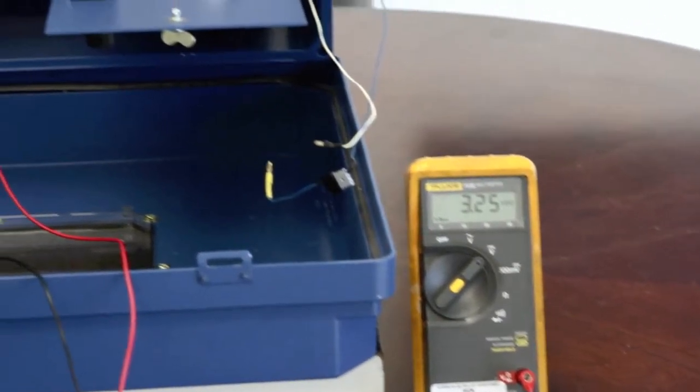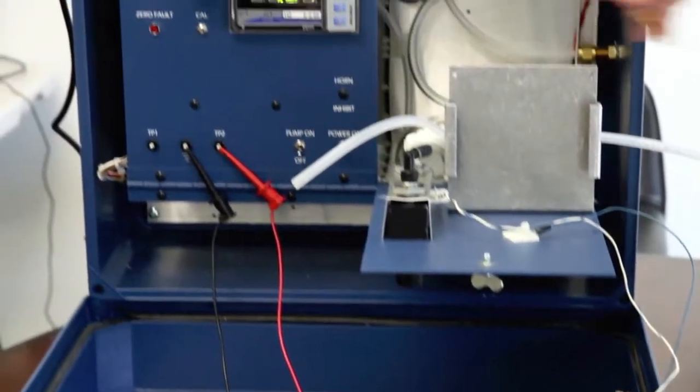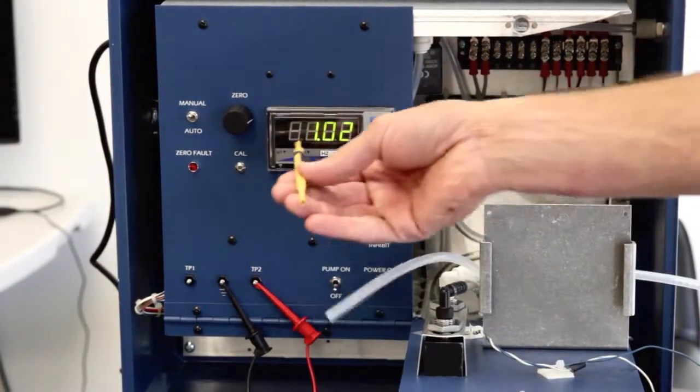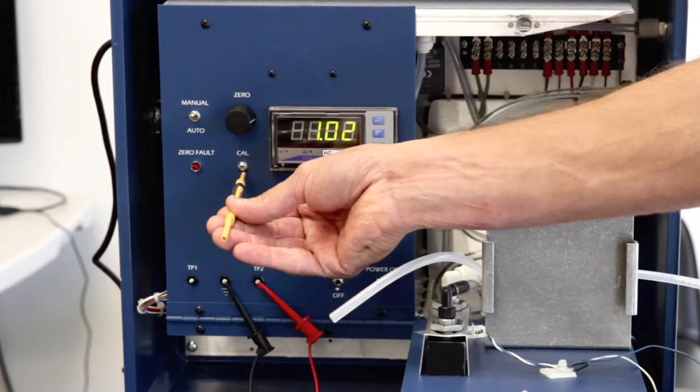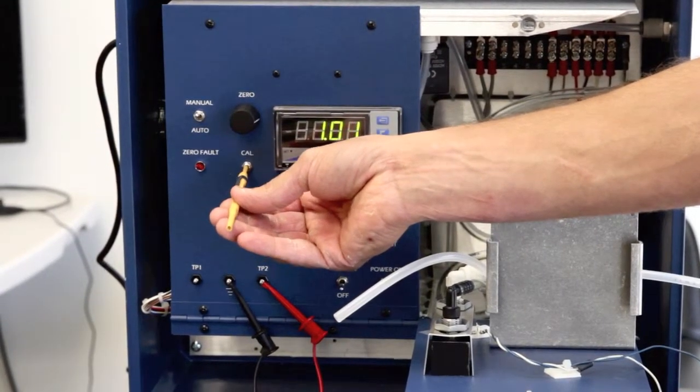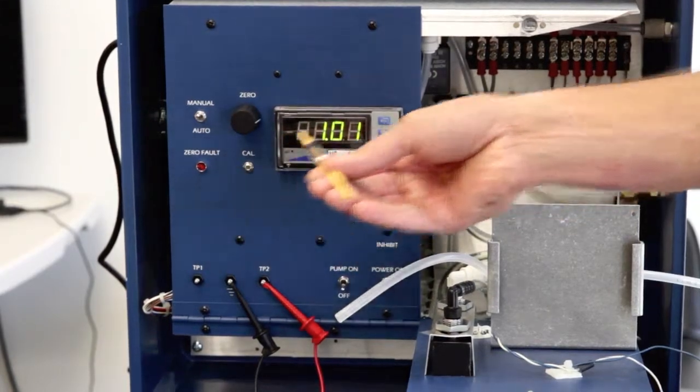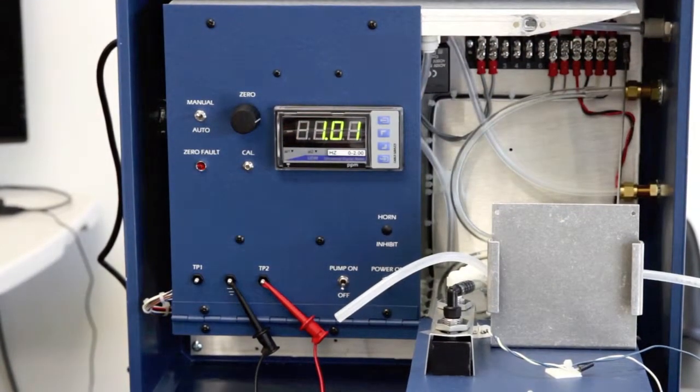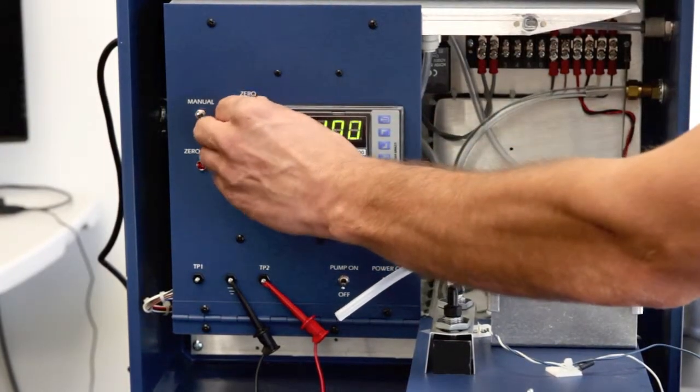Adjust the cal control on the analyzer so that the analyzer display, not the digital voltmeter, reads 1.00. It may take several moments for this reading to stabilize. Re-zero the instrument using the instrument's zero control.